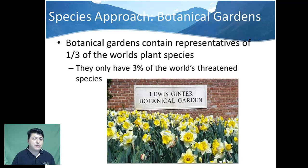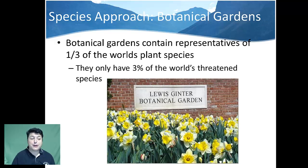Another way to have a species approach would be botanical gardens. Botanical gardens are enclosed spaces designed to conserve and have representative members of plant species. Right now, botanical gardens contain representatives of about a third of the world's species, but unfortunately they only have about 3% of the world's threatened species.